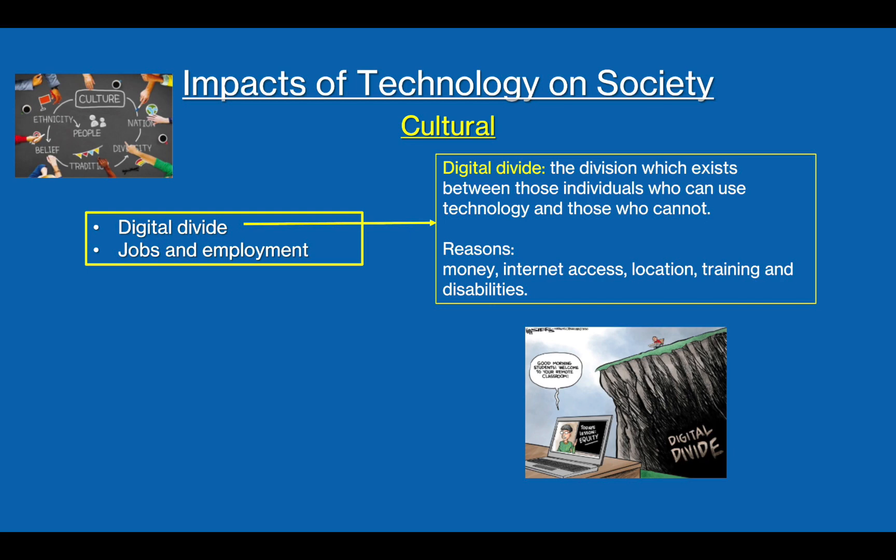It is the difference in access to technology where some groups have more access compared to others. Reasons for this include money, internet access, location, training, and disabilities. For example, more affluent people can afford computers, which they can use to access more information than less affluent people, and this digital divide means that the more affluent can potentially get better jobs.